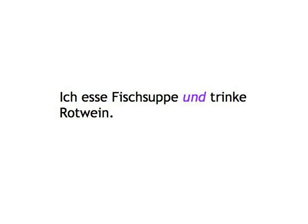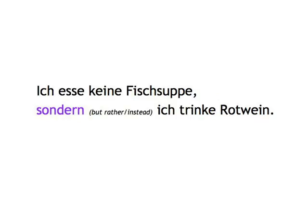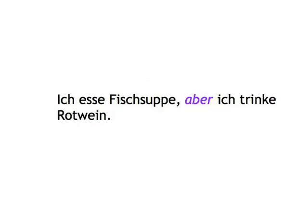The conjunction aber has the complementary equivalent sondern. Aber is used for 'but' when it means 'however.' Sondern is used when 'but' means 'on the contrary' — when the first sentence is negative and you want to express a mutually exclusive contrast, you have to use sondern. Ich esse keine Fischsuppe, sondern — but rather, instead — ich trinke Rotwein. In the sondern sentence you don't have soup but instead have red wine, whereas in: Ich esse Fischsuppe, aber ich trinke Rotwein — you both eat and drink; however, you have red wine, not the expected white wine with the fish.